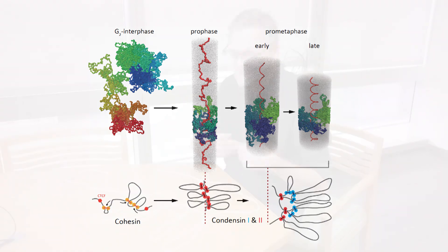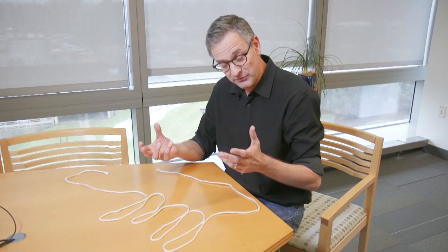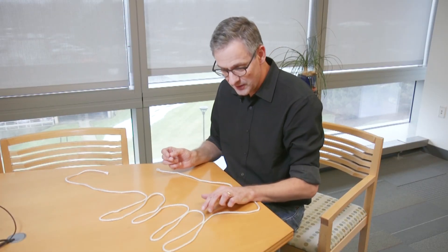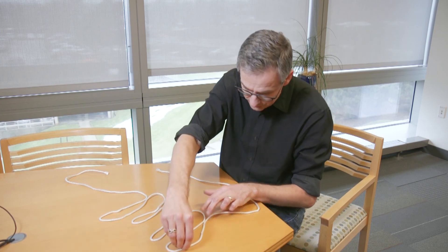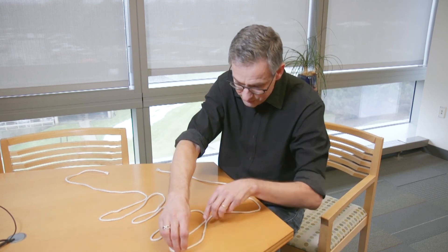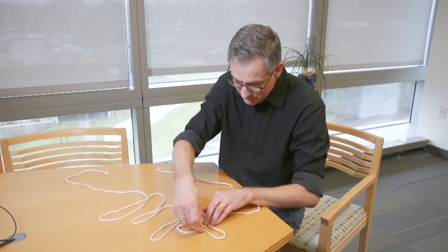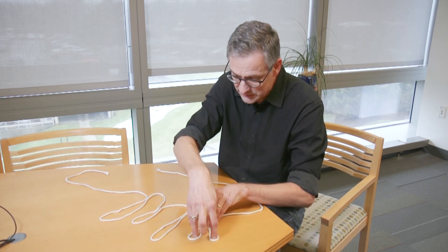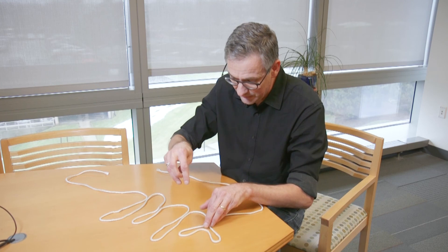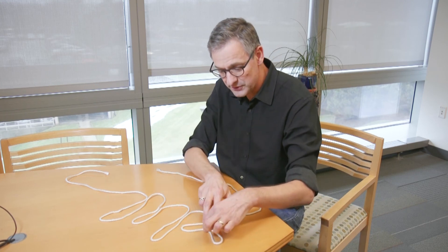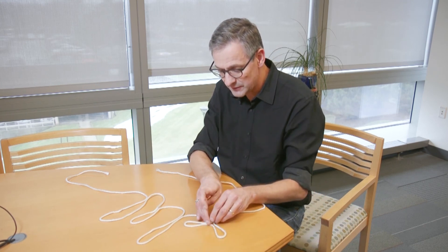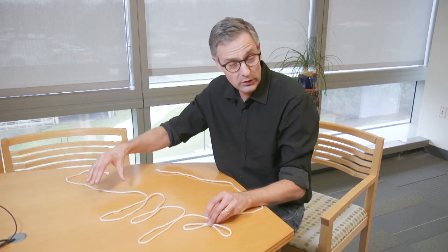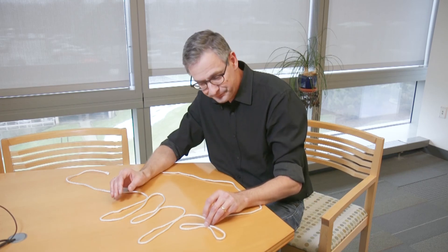So in a second round of folding, the same machine or the same type of machine will land inside the loop and repeat this process, and basically split each loop into smaller loops. So now we have a series of small loops all along the chromosome.